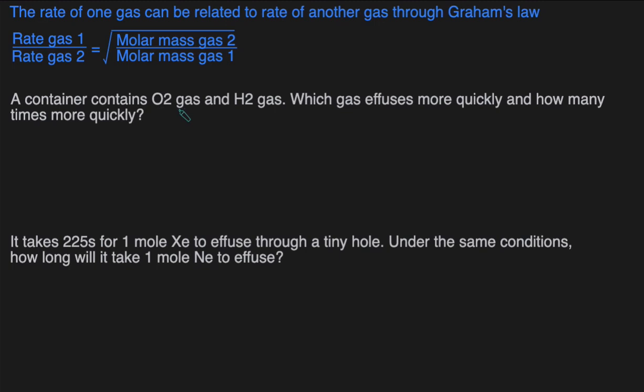First question. A container contains O2 gas and H2 gas. Which gas effuses more quickly and how many times more quickly? So first we have to determine which gas is going to exit that small opening more quickly. Well, that's just inversely related to how heavy the gases are. So lighter gases move more quickly, heavier gases move more slowly. Let's take a look at the molar masses. O2 molar mass is 32 and H2 molar mass is 2. So H2 is going to effuse more quickly than O2.